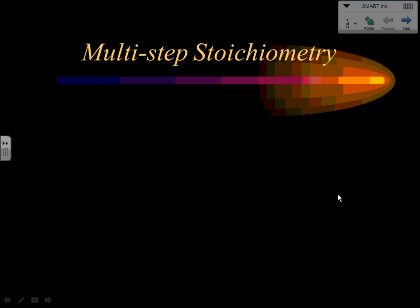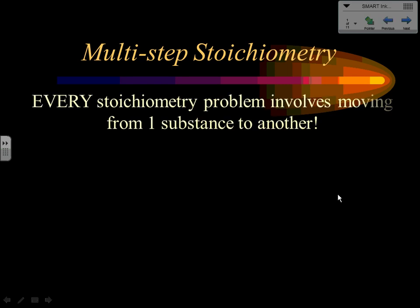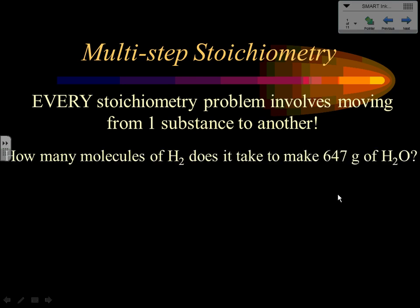This second set of notes on stoichiometry deals with more complex multi-step stoichiometry problems. Every stoichiometry problem involves moving from one substance to another — that's what makes it stoichiometry — using the mole ratio we looked at in the previous set of notes. So if we're going to do a problem like this: how many molecules of hydrogen does it take to make 647 grams of water?